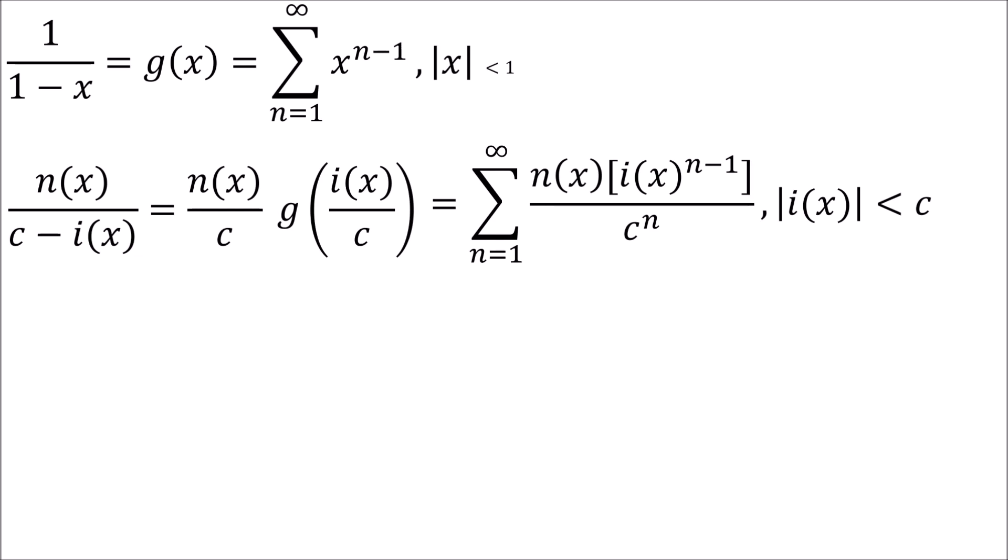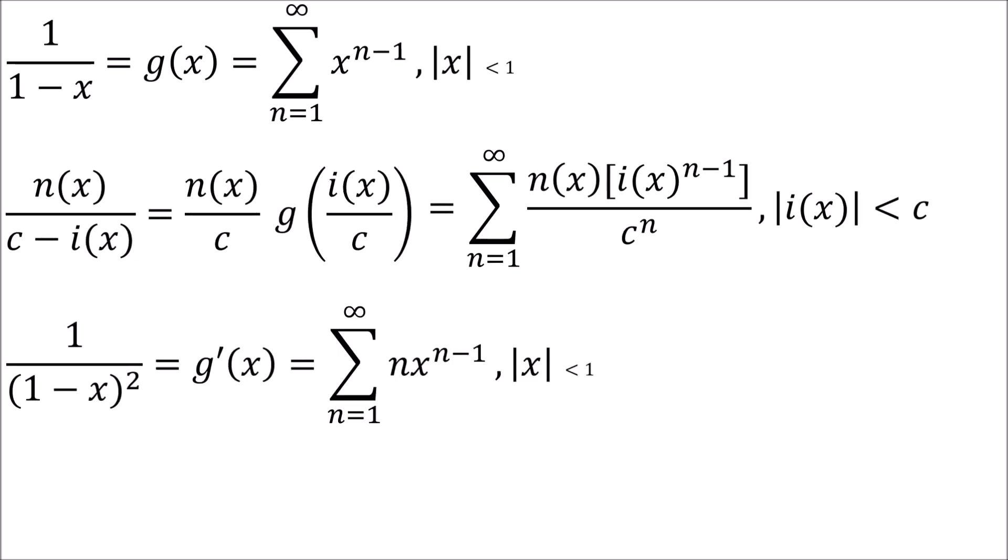What if it's of the form 1 divided by 1 minus x squared? Rather than partial fraction decomposition, let's recognize that 1 over 1 minus x squared equals the derivative of g. I can differentiate my power series term by term, getting the sum from n equals 1 to infinity of n times x to the n minus 1, converging when the absolute value of x is less than 1. Importantly, differentiating and integrating term by term do not change the radius of convergence, so I keep the same radius as the original.